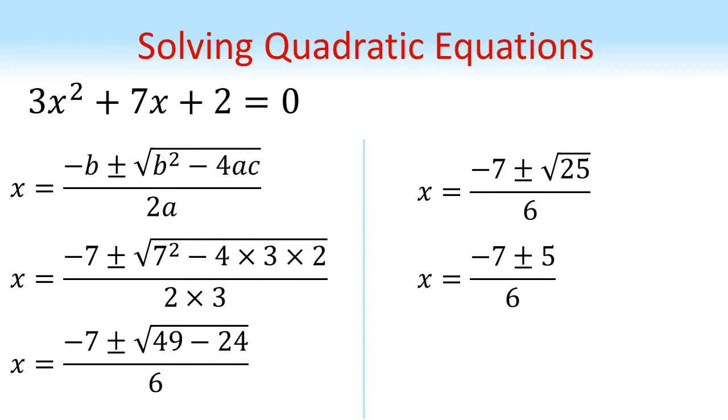Now working out the answers to this: if we do minus 7 minus 5 divided by 6, we get negative 2. And if we do minus 7 plus 5 divided by 6, we get negative a third. These are two values of x that will make the left-hand side of our original equation equal to zero.